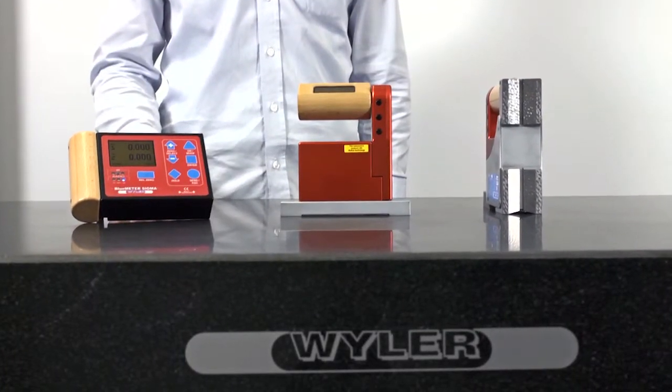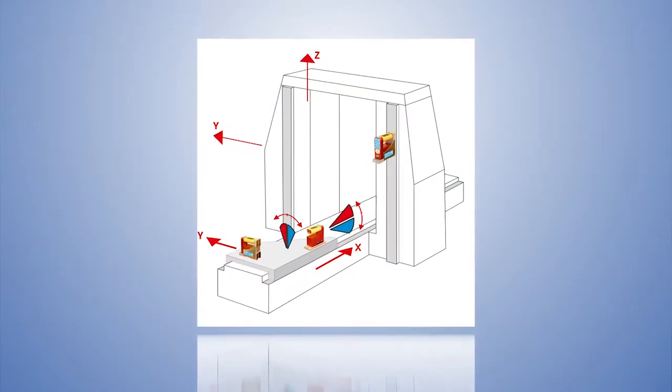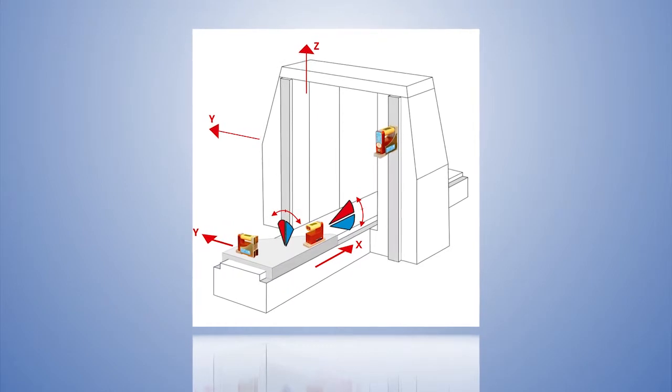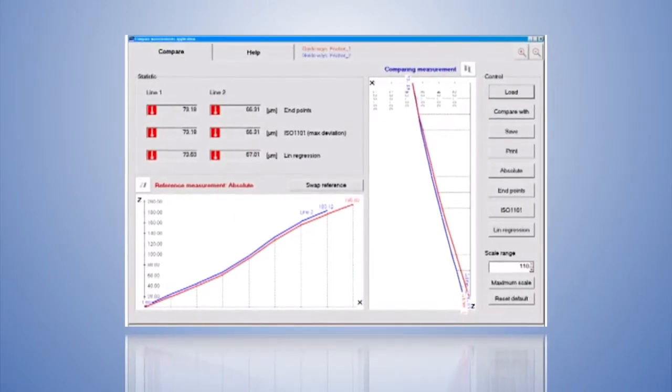A further application requiring the absolute measurement is the comparison of various elements of a machine tool, for example, the horizontal to the vertical guideway.